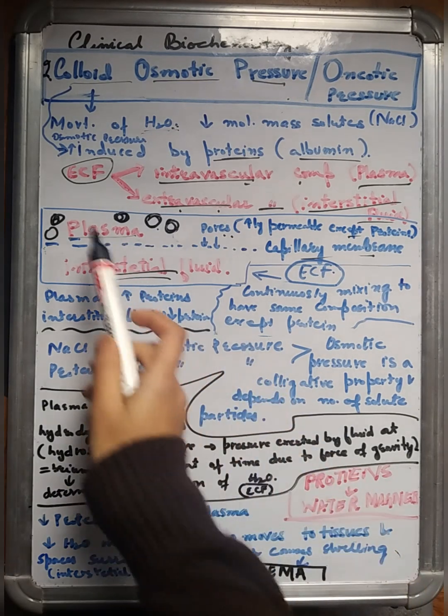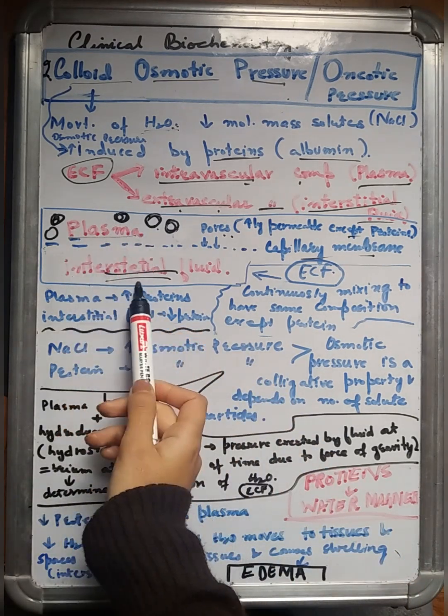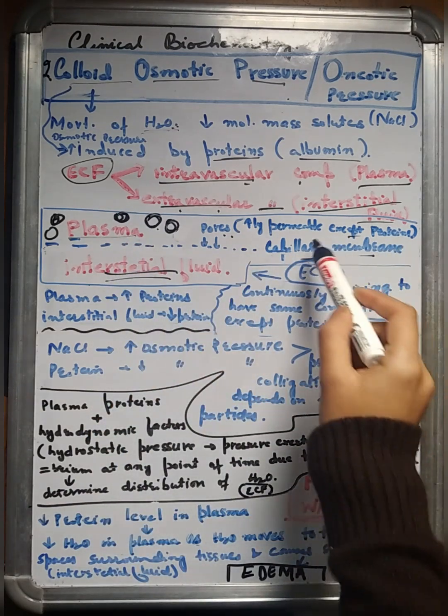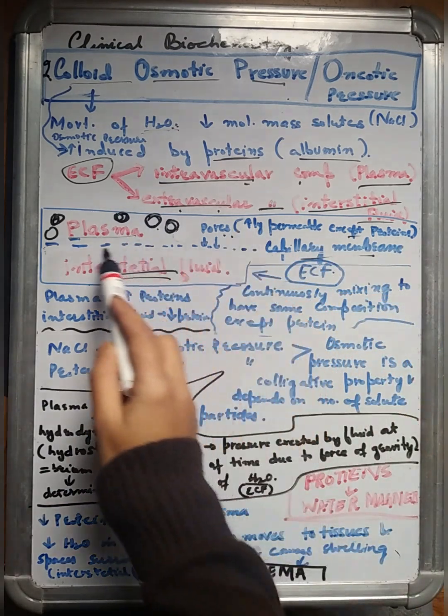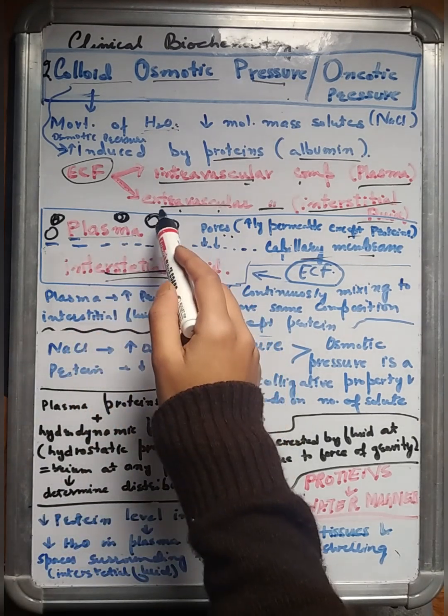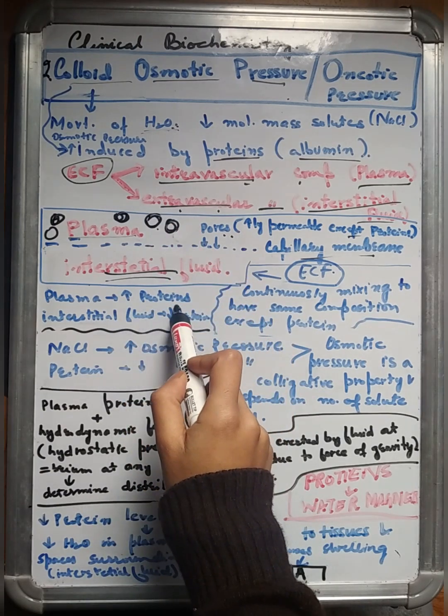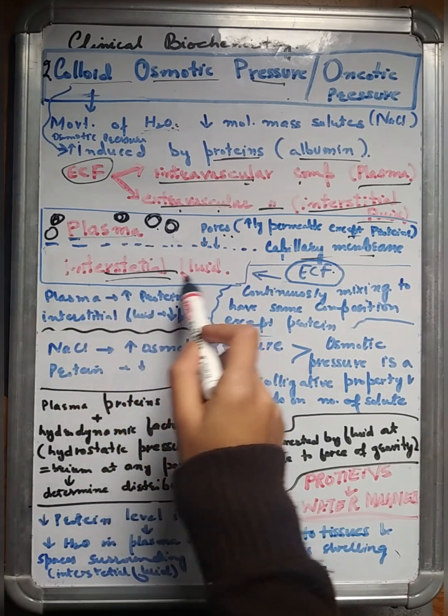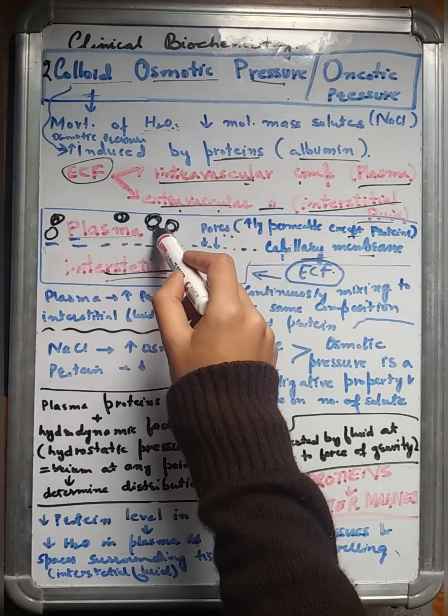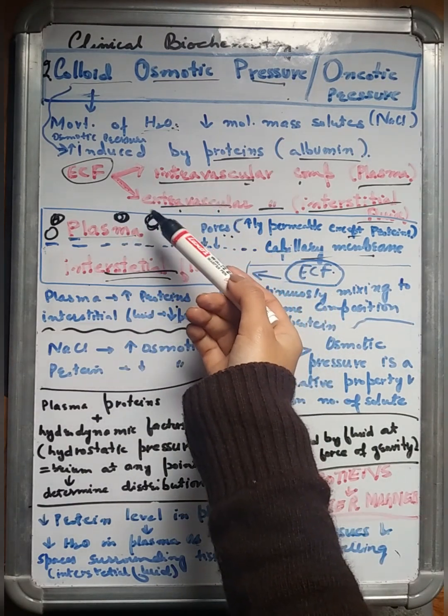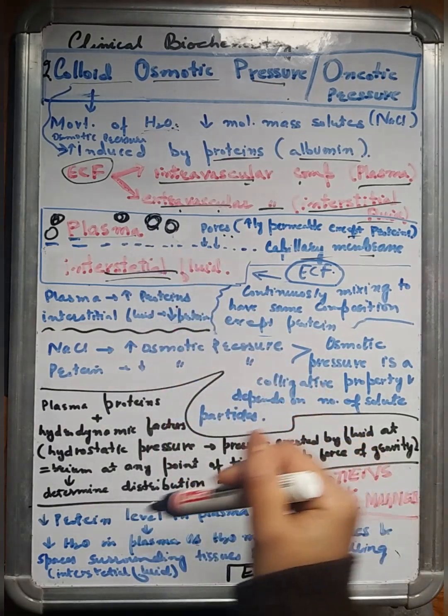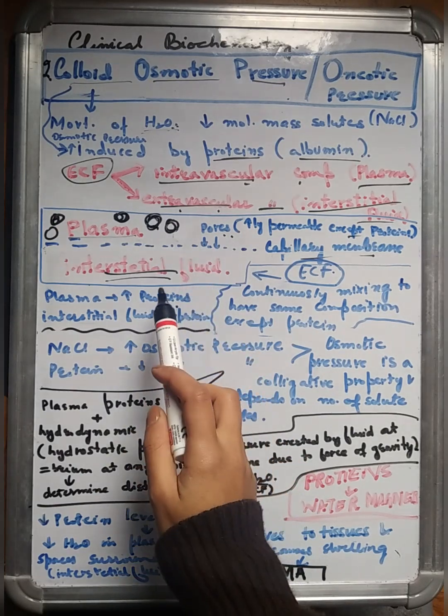Let's now have a look here. If this is a plasma and here is the interstitial fluid, in between is present a membrane known as a capillary membrane, and this membrane is porous, meaning there are small pores in between. Usually plasma has more concentration of proteins in comparison to the interstitial fluid. So it doesn't allow the proteins that are present in the plasma to pass towards the interstitial fluid.